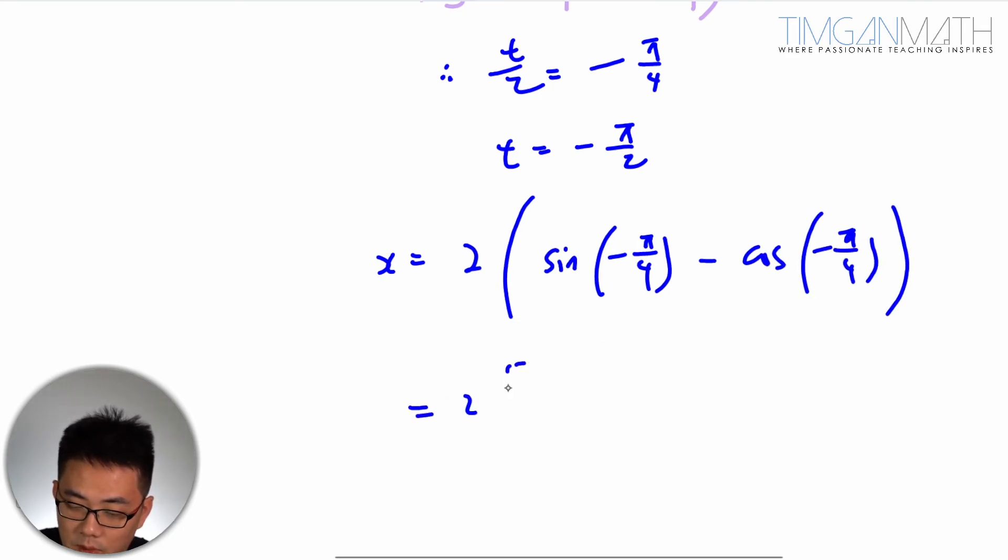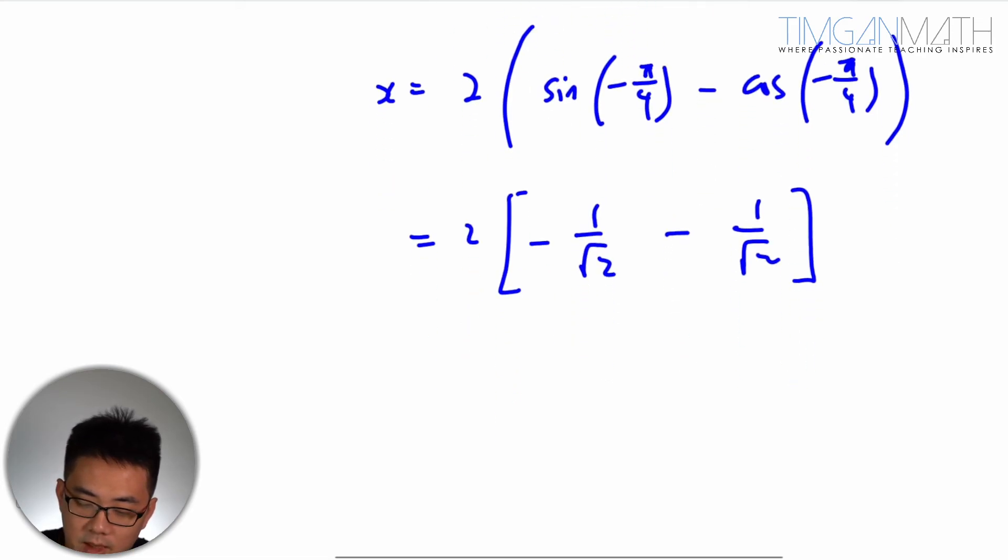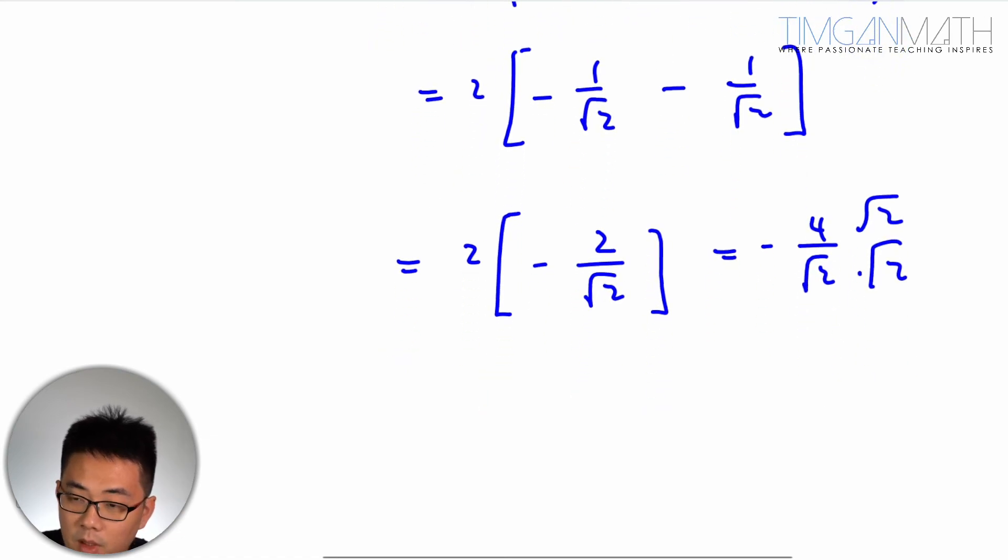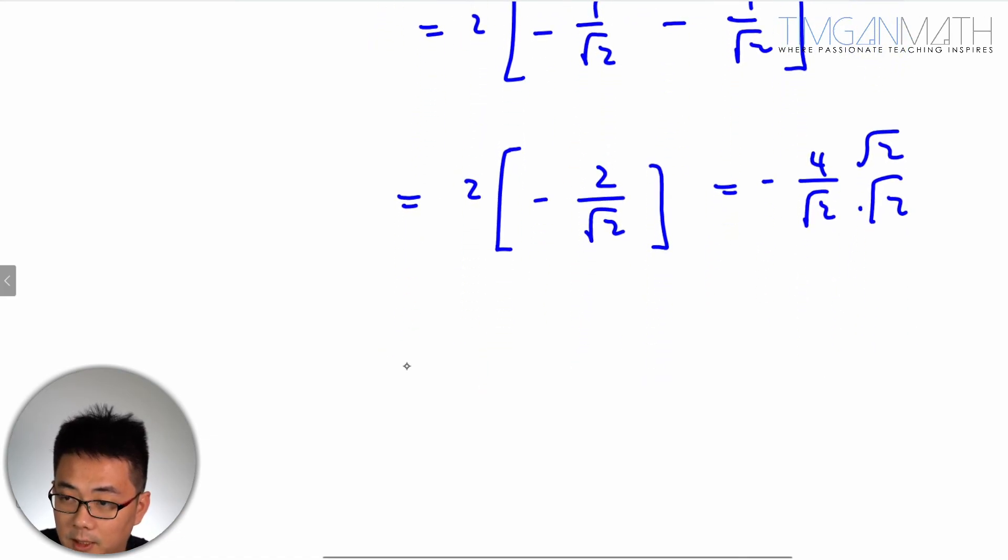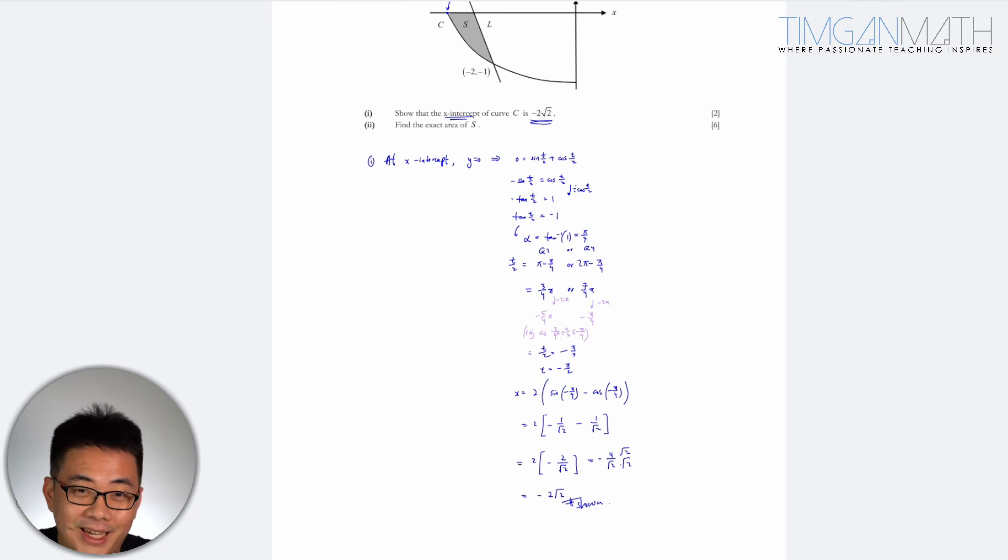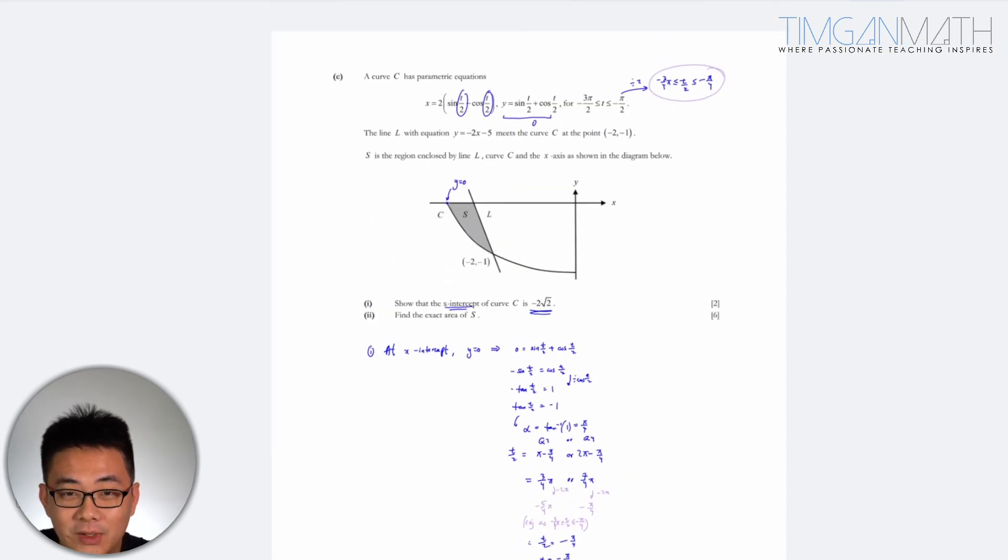This will just be 2 times -1/√2, this will be positive 1/√2, so this case here will just be 2 times -2/√2. Rationalize the denominator, multiply by √2 over √2. This would then be -2√2. Okay, so 2 marks. Okay, let's look at part 2.